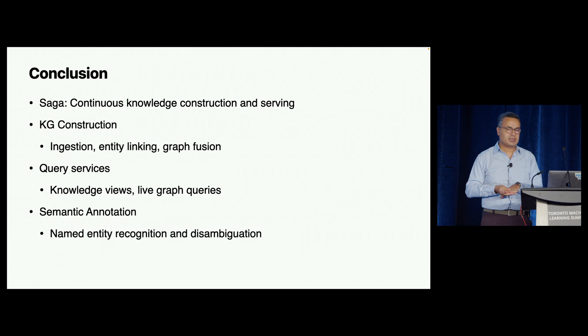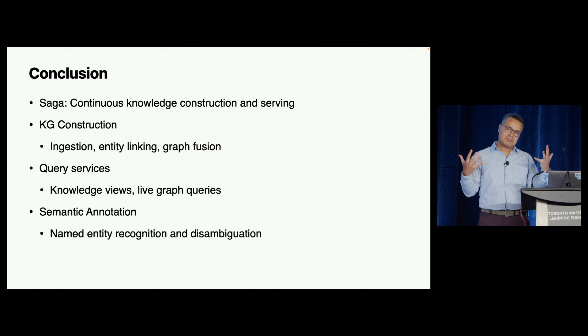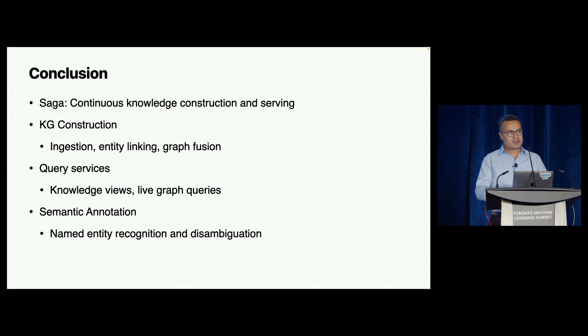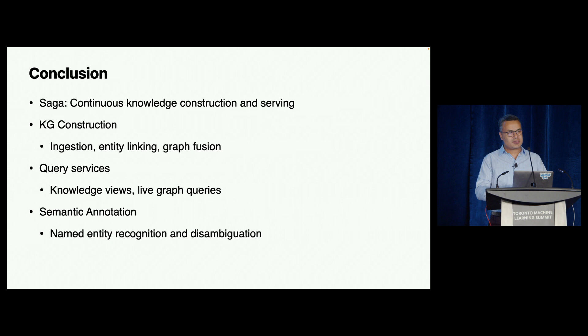In conclusion, continuous construction and serving of a knowledge graph is really exciting — it's a CS-complete problem. It's machine learning, ML Sys, ML models, data systems, data integration, streams — probably the only thing we don't do is robots or self-driving. Knowledge graph construction, ingestion, entity linking, graph fusion, query services — we insist on this concept of knowledge views: you never let the original graph out, but you build a strong view engine behind it. And semantic annotation is one of the key machine learning services that people use for this graph.